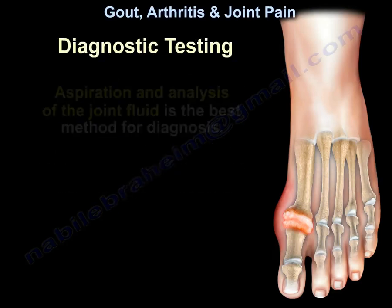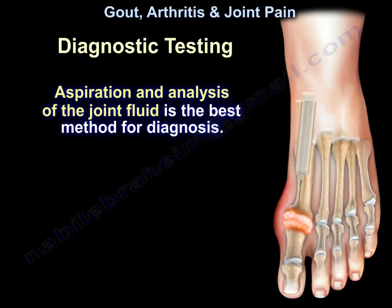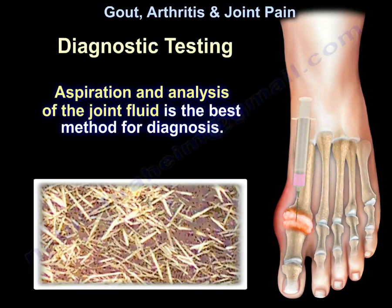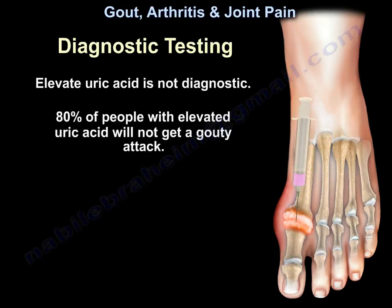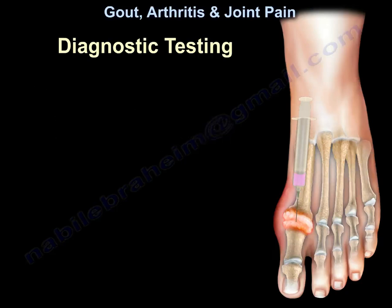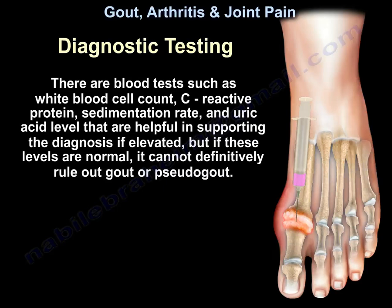For diagnostic testing, aspiration and analysis of the joint fluid is the best method for diagnosis. Elevated uric acid alone is not diagnostic — 80% of people with elevated uric acid will not get a gouty attack. Blood tests such as white blood cell count, C-reactive protein, sedimentation rate, and uric acid level are helpful in supporting the diagnosis if elevated, but normal levels cannot definitively rule out gout or pseudogout.